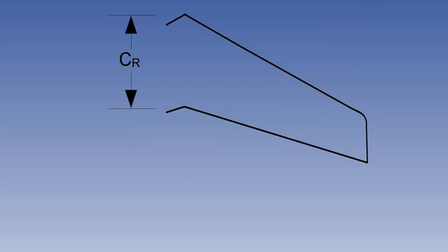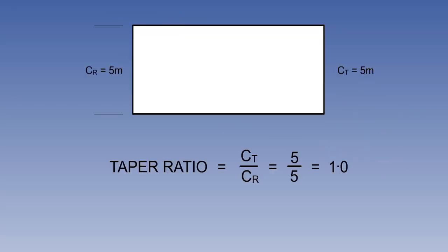Continuing with the terminology, we have root cord, which is the cord length at the wing's centreline, denoted by CR. Logically, at the other end of the wing is CT, the tip cord. The ratio between these two is known as the taper ratio, CT to CR.